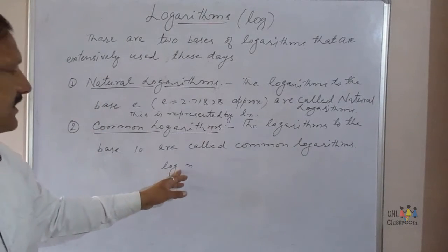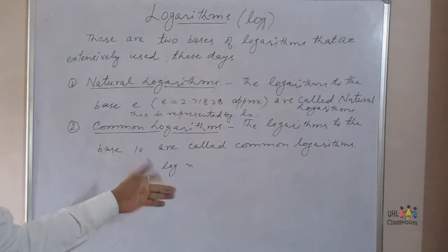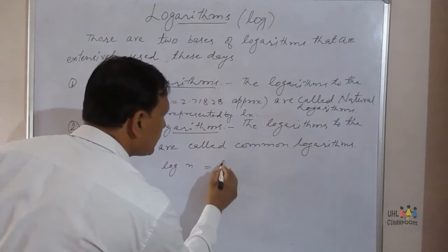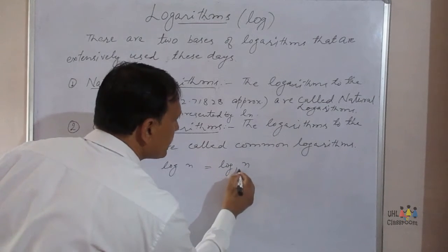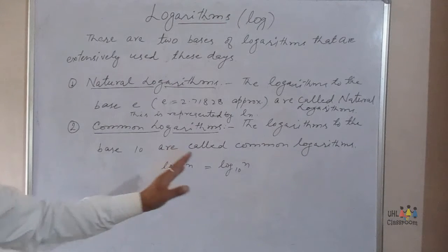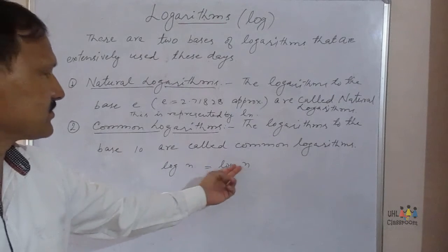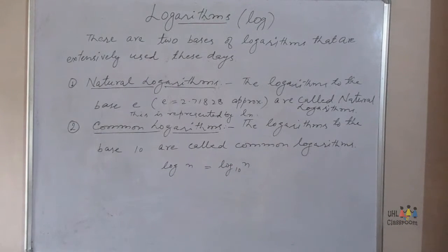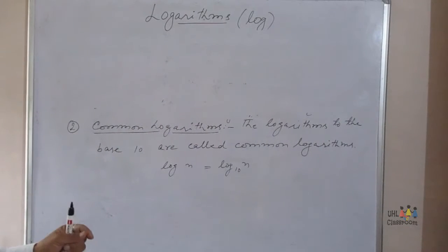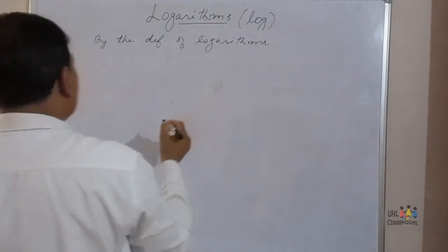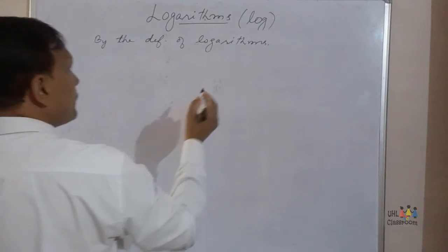Even without writing the base, if no base is given, it means common logarithms — that is, its base is 10. So we can write it without a base as well; this is one and the same thing. In this chapter, we will study common logarithms in detail.